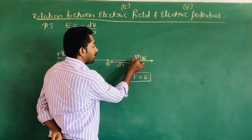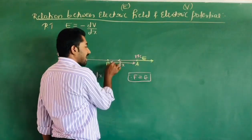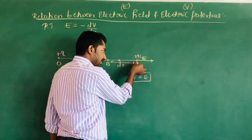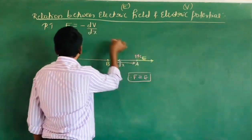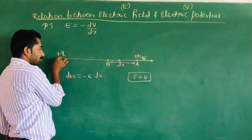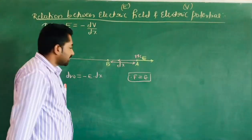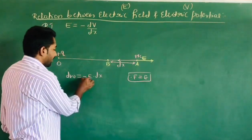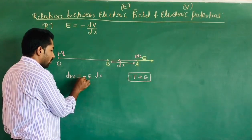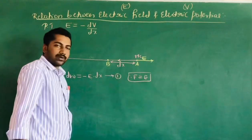Here one coulomb of unit positive charge moves from point A to B in one direction, but the electric field produced at point A due to the test charge is in the opposite direction. That is why we write the negative symbol: dW is equal to minus E into dx. This is equation number 1.